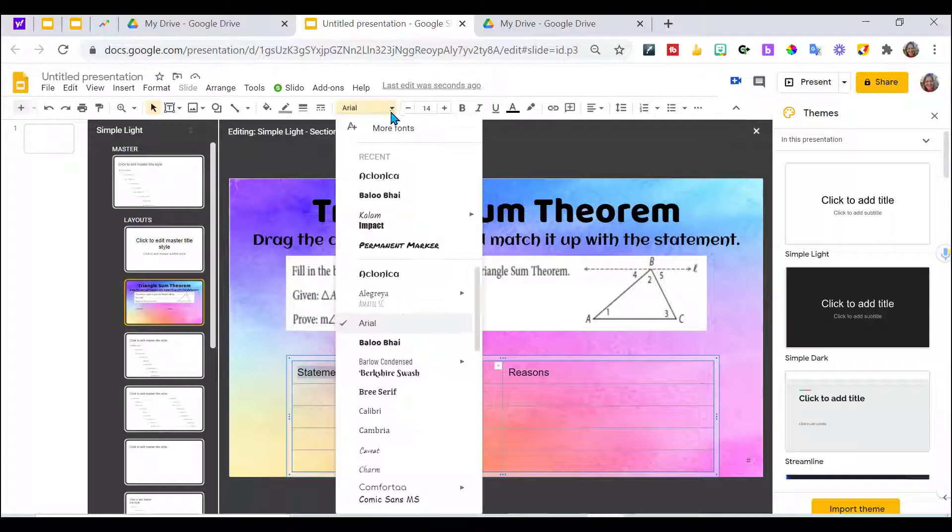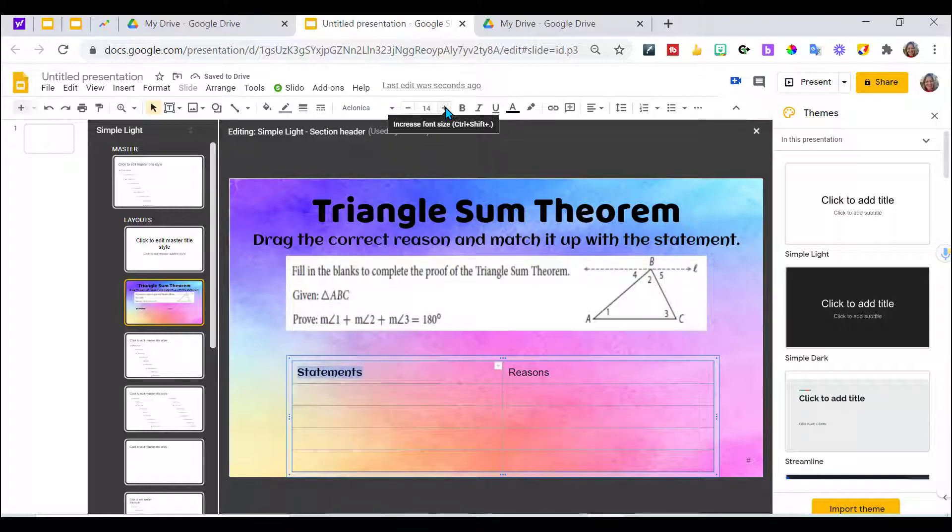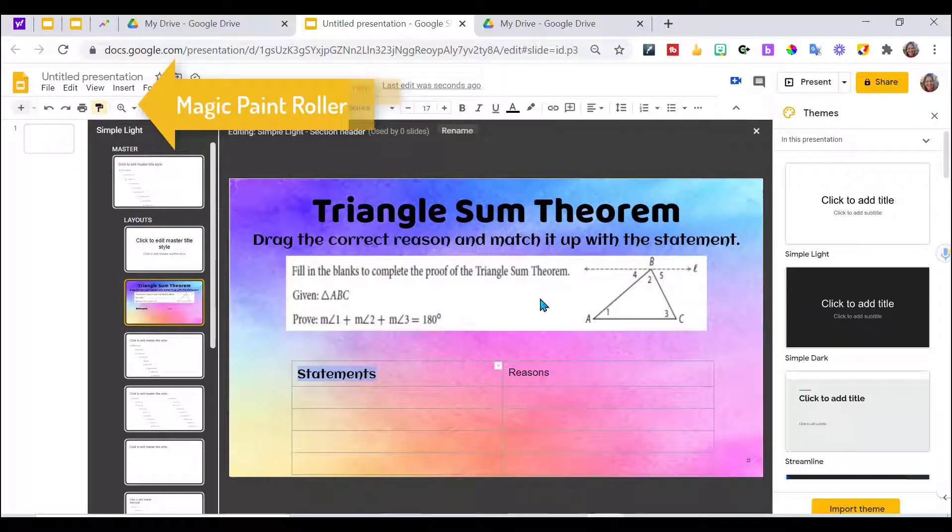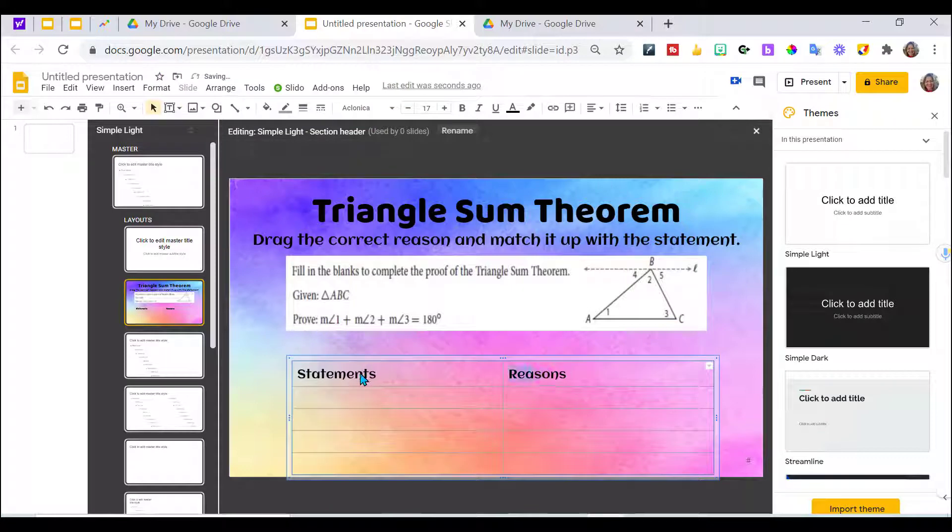I want to change the font and I want to increase the font size, make it a little bit bigger. I like that. While I have it highlighted, I'm going to go up here to this paint roller, click on that, and then click on reasons. And it's going to match it up. I think I want this to be centered also. So I can highlight it and then go up here and center. Do the same for the other one. Okay, that's looking good.